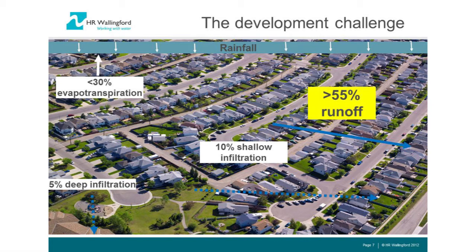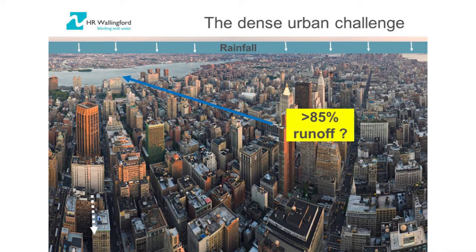Only 10% delivers temporary surface flows as a result of rainfall events. As we increase development within our catchment, we significantly impact the amount of water infiltrated — both shallow and deep — and dramatically increase the proportion running off as surface water. In a very dense environment, almost everything ends up in the watercourse as temporary flood flows or on the ground as pluvial flooding.